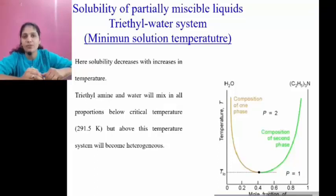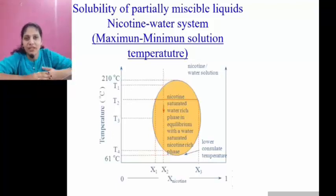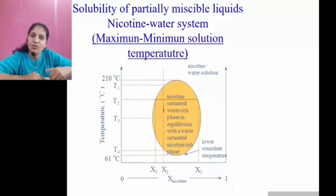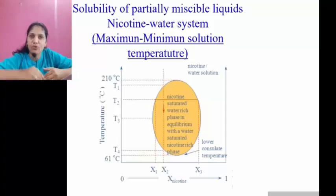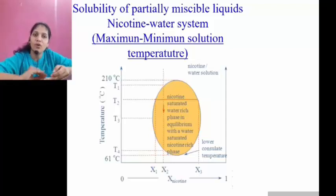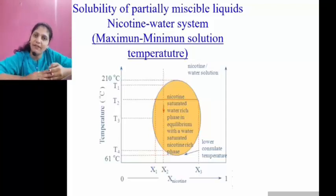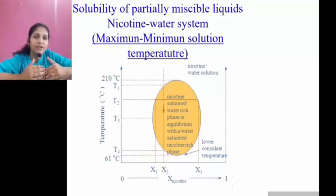Now let's see the last class of partially miscible liquids, where solubility both increases and decreases with increasing temperature. The example is the nicotine-water system. In the nicotine-water system there are two temperature ranges: between 61 degrees centigrade and 210 degrees centigrade, all compositions of nicotine and water mix well and form a homogeneous miscible liquid pair. But below 61 degrees centigrade they form two separate layers.